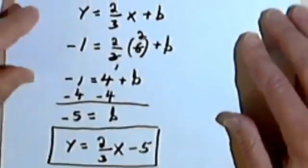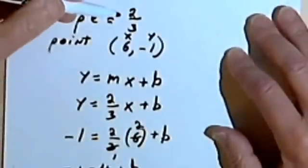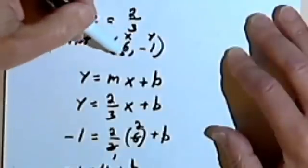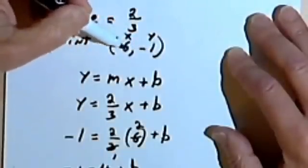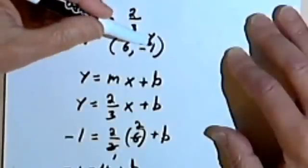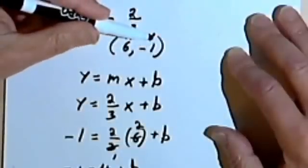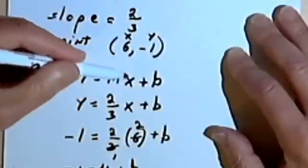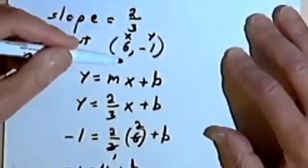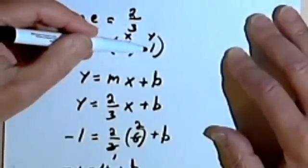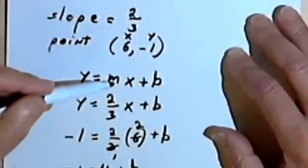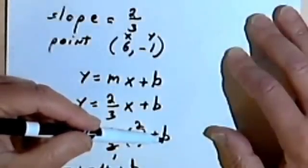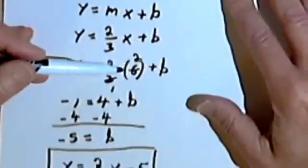So to review this method, you're given a slope and you're given a point. And the thing to remember is that that point is a pair of values, an x-value and a y-value. That's what your ordered pair is. And you can take that x and y-value and in the equation y equals mx plus b, I can plug the x-value in instead of the x, I can plug the y-value in instead of the y, and I can plug the slope in instead of the m. So then I've got everything I need to find out what the y-intercept is, what the b is. And once I've got the b, I can rewrite the whole equation.